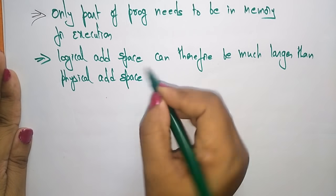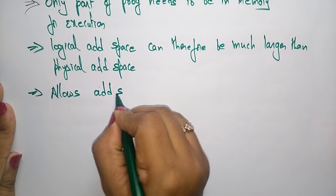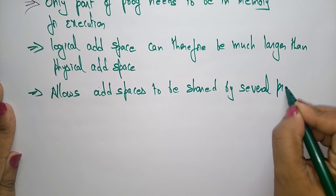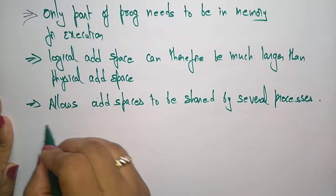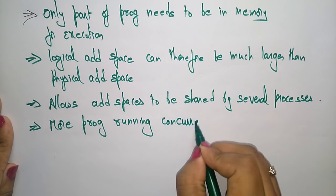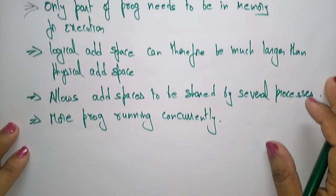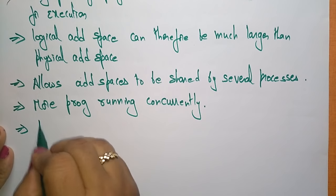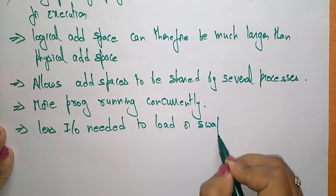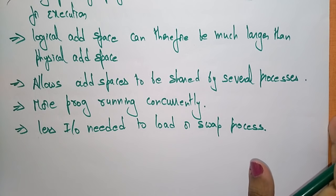Whatever the virtual memory, that is the logical address space we are using, is much larger than the physical address space. It allows address spaces to be shared by several processes, and more programs can run concurrently using this virtual memory technique. It also requires less I/O — the input/output need is less to load or swap the process. This virtual memory concept uses less input/output requirement.